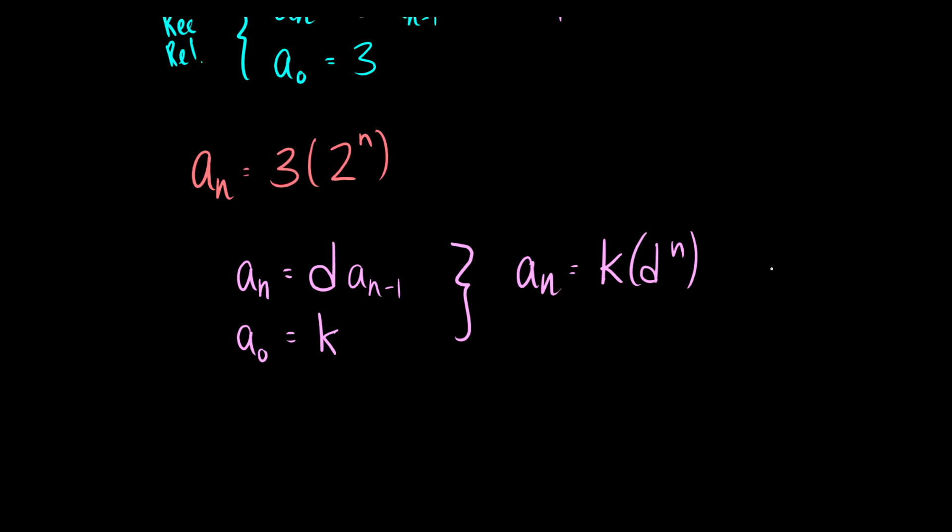then we can summarize this formula as a_n is equal to k times d to the n. And of course, this is going to be for n greater or equal to 0. This section is going to be n greater or equal to 0. And this recurrence relation is going to be n greater or equal to 1. So these are two different ways of looking at things. One is a recurrence relation. The other is a nice formula that allows us to compute any number without needing to know the previous numbers.